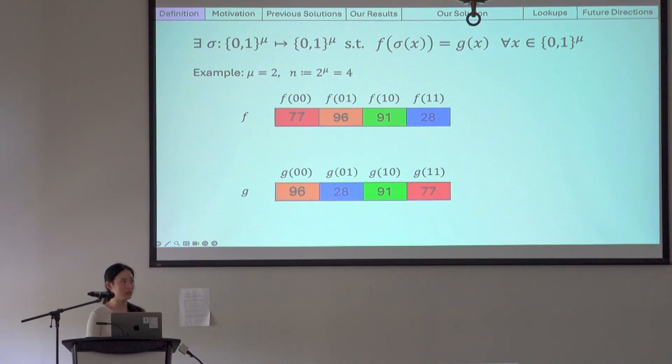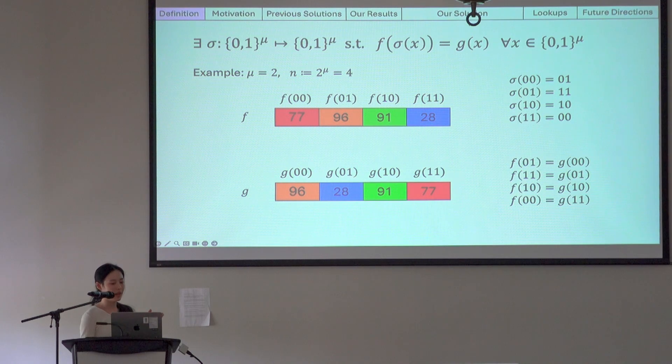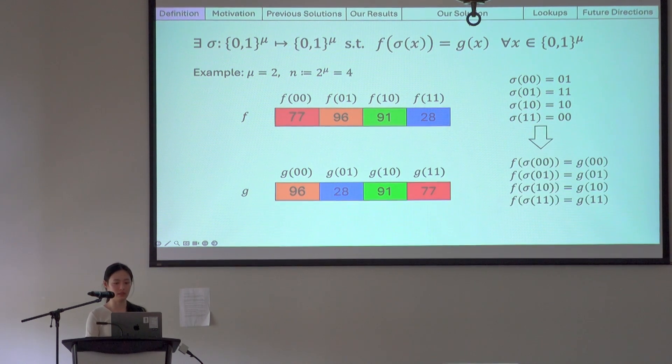We can see that the blocks of the same color hold the same values. So f and g are indeed permutations of each other. This implies that there exists a permutation polynomial sigma, which maps from the indices on the g table to the corresponding indices of the same color blocks on the f table such that f of sigma is equal to g on all four of these indices.